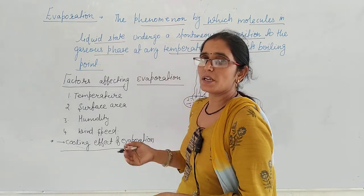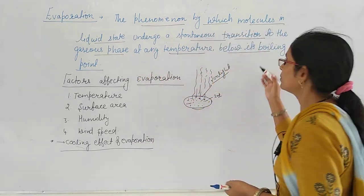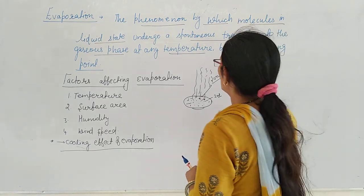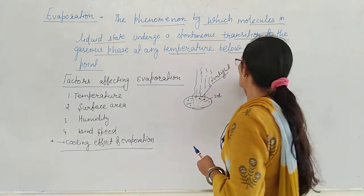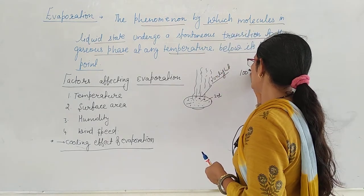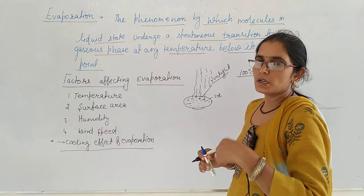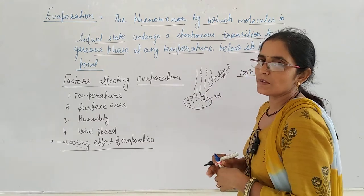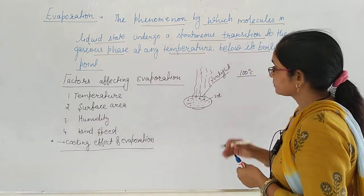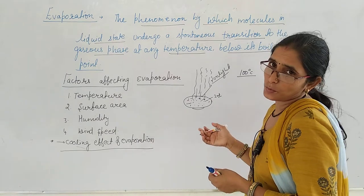At any temperature — at any temperature below the boiling point. For example, the boiling point of water is 100 degrees Celsius. When water boils, it changes into steam. But evaporation can happen at any temperature below the boiling point.